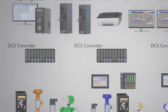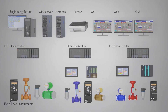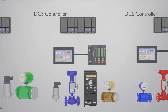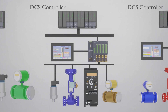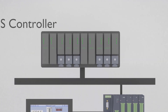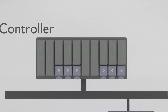Like PLC, we need instruments to see what's going on in the process. You have different instruments like VFDs, control valves, and different transmitters, which are connected to the DCS through I/O cards. Like PLC, DCS also has input and output cards — analog input cards, digital input cards, analog output cards, and digital output cards.